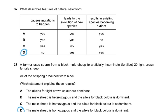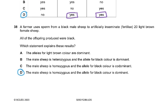Question 37. What describes features of natural selection? Features of natural selection cause mutations to happen? No. Mutations occur and that results in natural selection. Leads to evolution of new species? Yes. Results in existing species becoming extinct? Yes, sometimes, because it's survival of the fittest. Those which are not fit will die out. The best adapted survive and the least adapted will die off and will not be found on the face of this earth.